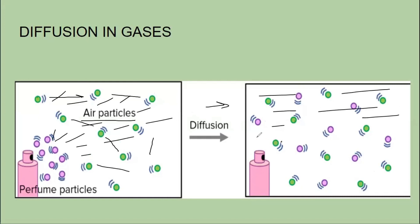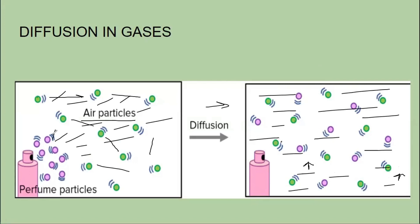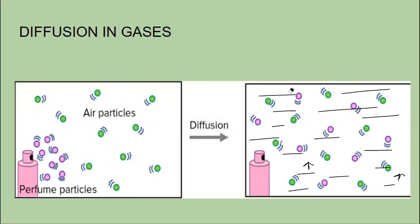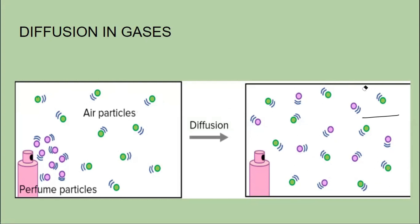Now everywhere in the room the concentration of the perfume molecules is equal. Those sitting near the perfume and those sitting far away can all smell it, because the particles have evenly distributed themselves in the entire room, fitting in between the intermolecular spaces of the air molecules. This is how the diffusion process takes place.